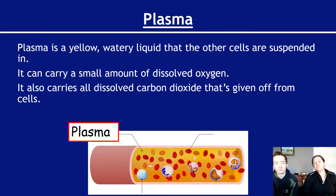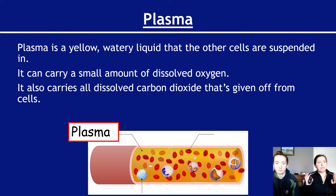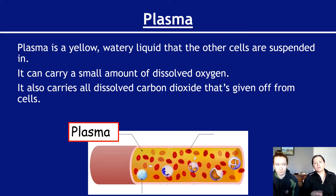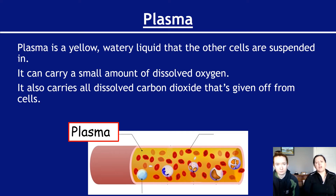So let's have a look at plasma. People think that your blood is red - yes, your blood is red, but the liquid part of blood is actually a kind of almost pea colour. It's a yellow, watery liquid that the other cells are suspended in. There are so many red blood cells in this liquid that when you cut yourself, it looks like you bleed red. But if you were to take a tiny little sieve and sieve out all the red blood cells, you'd be left with a yellow, watery liquid that is the plasma. It can carry a small amount of dissolved oxygen, but the majority of oxygen is in the red blood cells. It also carries all the dissolved carbon dioxide given off from cells during respiration, and that's carried to the lungs.